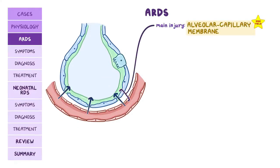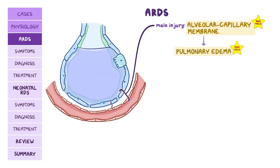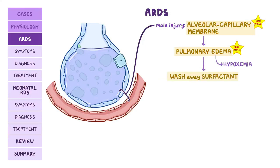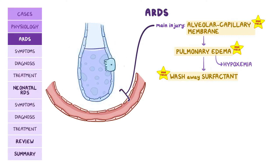The main site of injury is the alveolar capillary membrane, which becomes more permeable, causing fluid to move into the alveoli, resulting in pulmonary edema. This fluid can impair gas exchange, leading to hypoxemia. Furthermore, the edema can wash away the surfactant coating of the alveoli to the point where it can't reduce surface tension anymore, causing the alveoli to collapse.